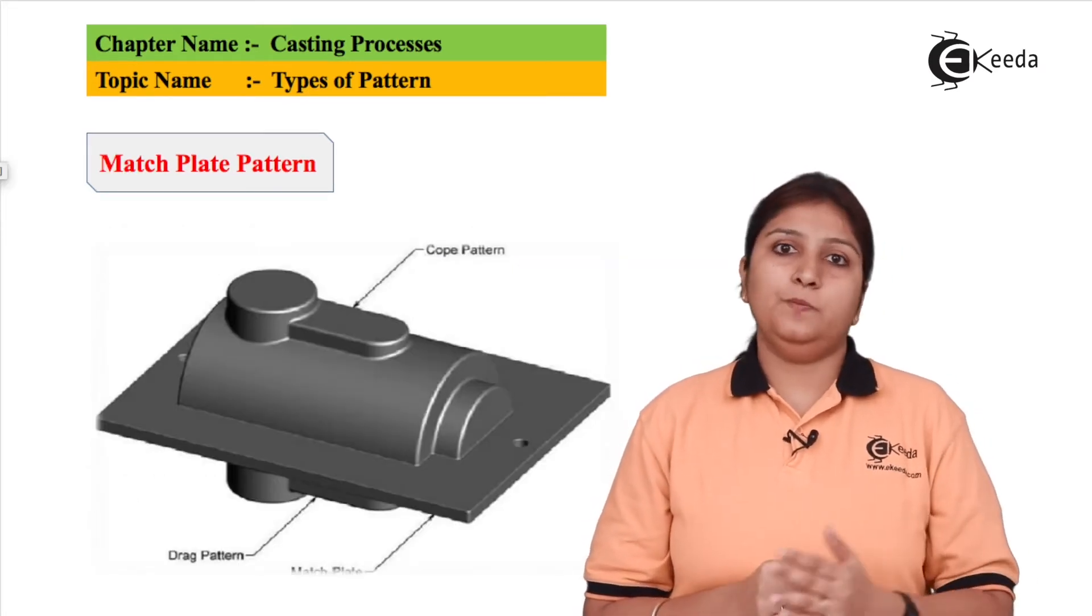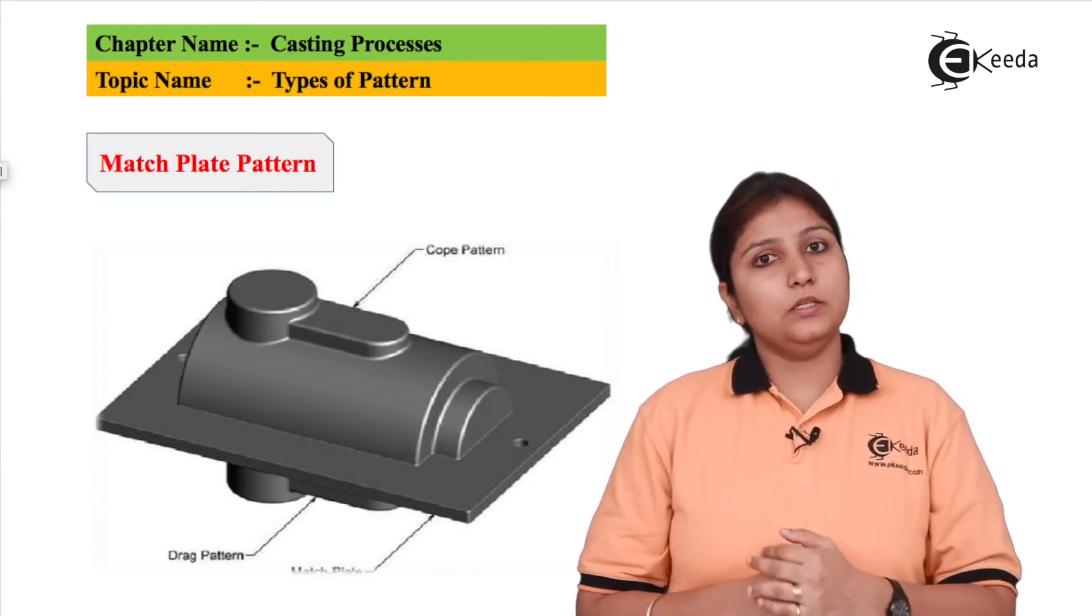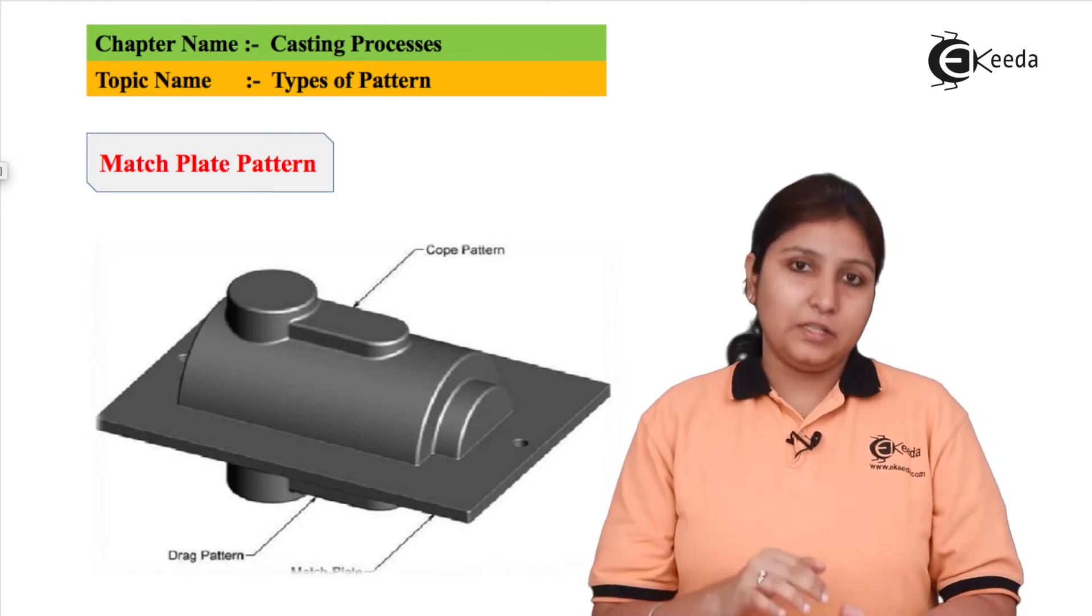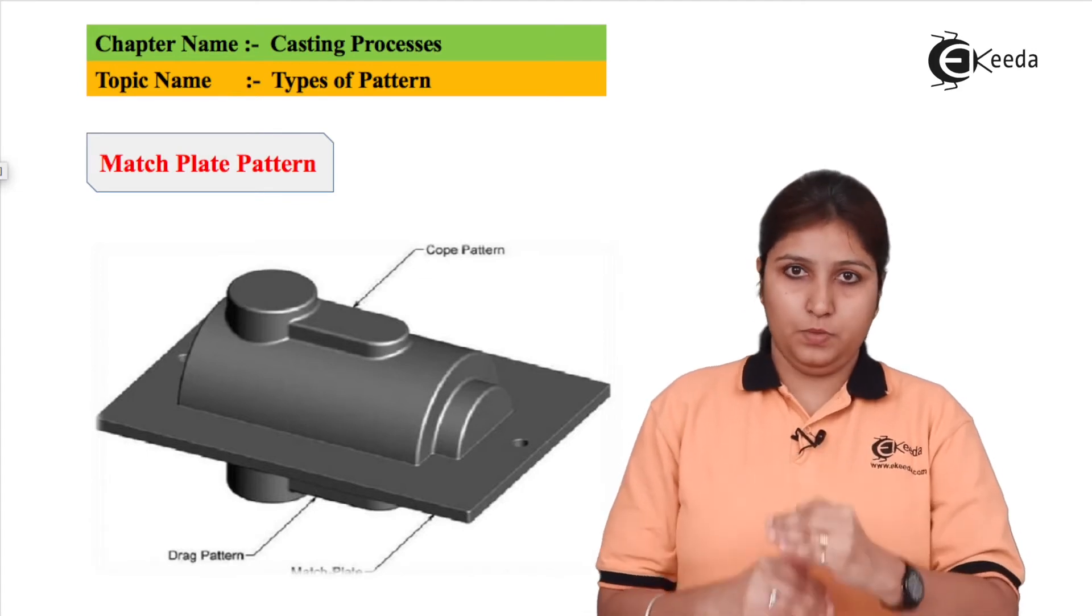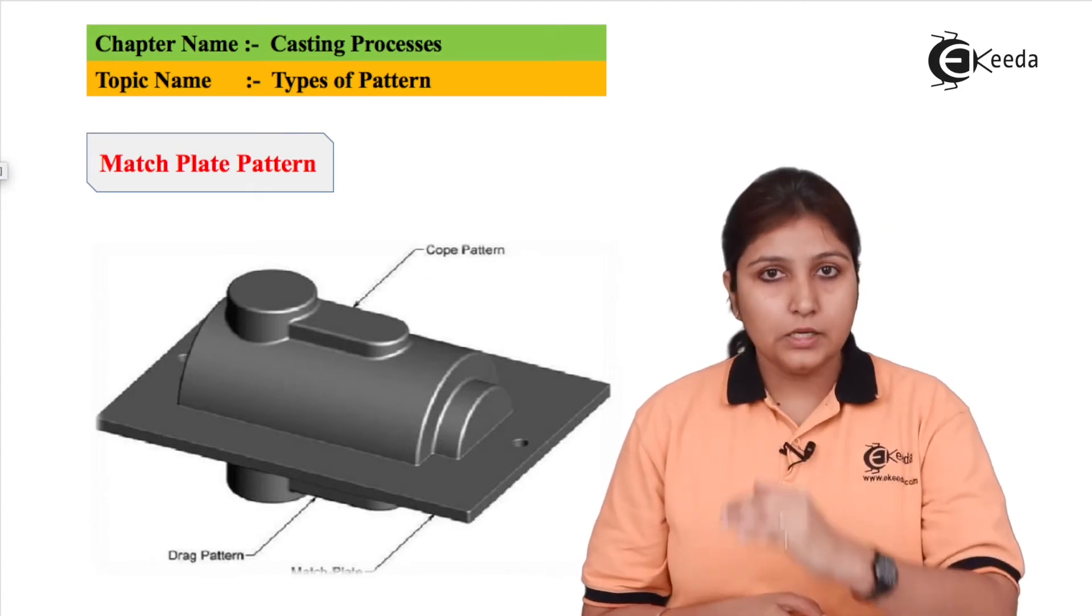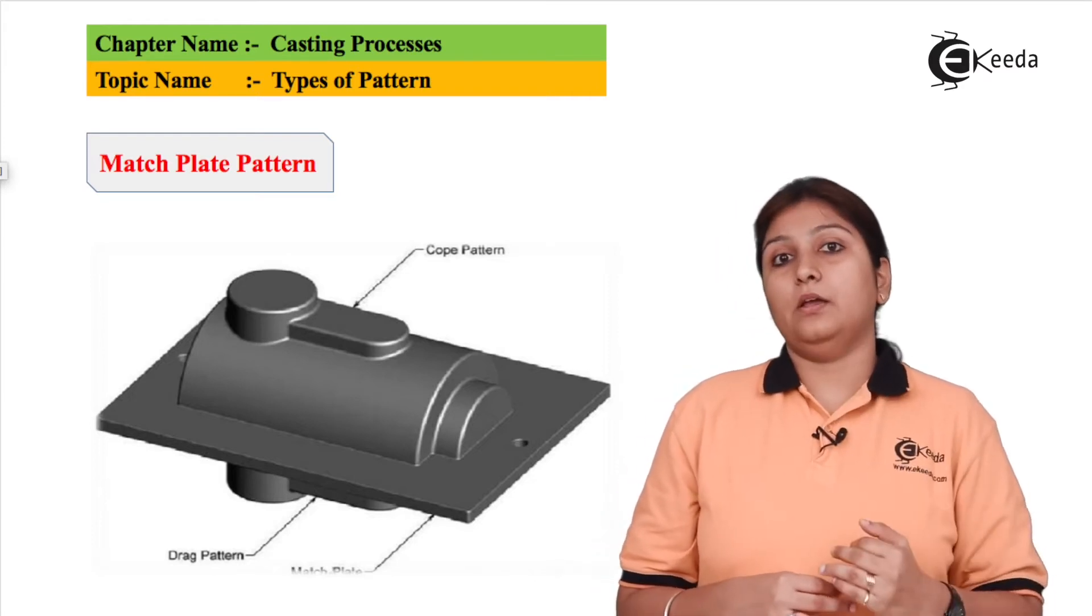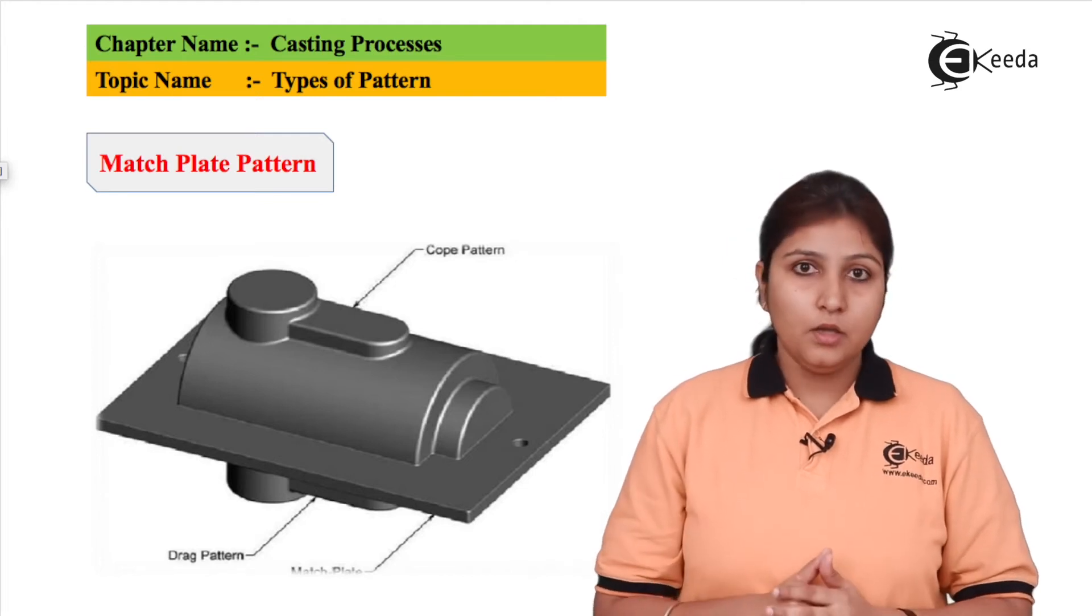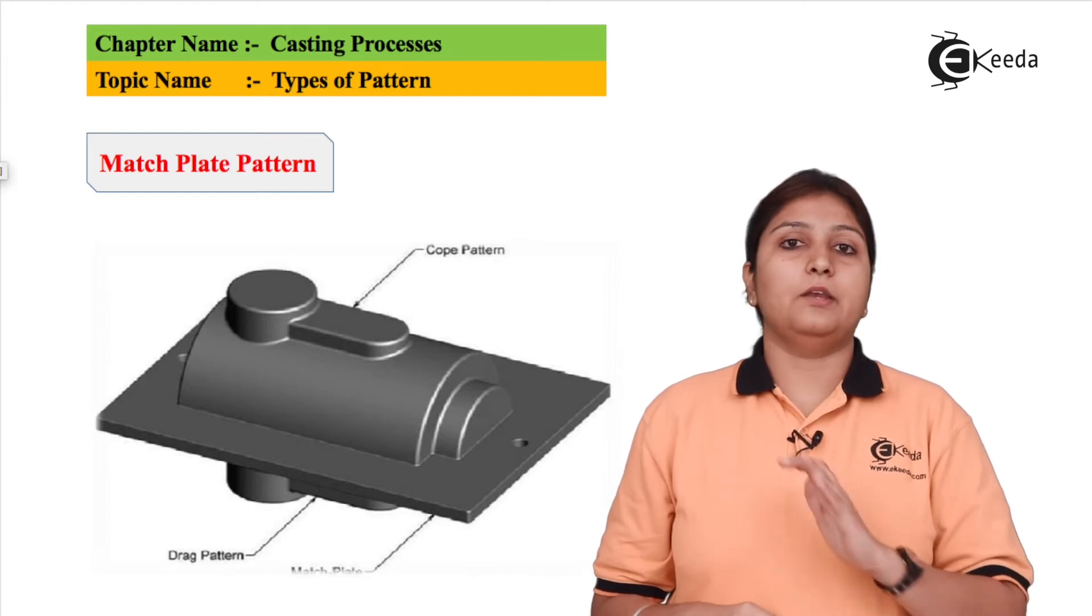This is match plate pattern, it is similar to split plate but a match plate is kept in case there are n number of split patterns which has to be matched the cope and drag. The cope and drag has to be matched so that the material can enter inside and fill the cavity. So for matching the cope and drag a plate is used which is known as match plate so the whole pattern basically is known as match plate pattern.